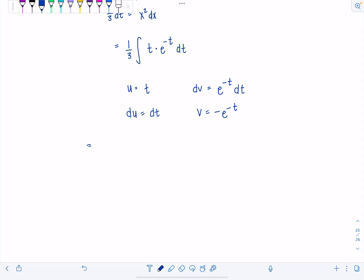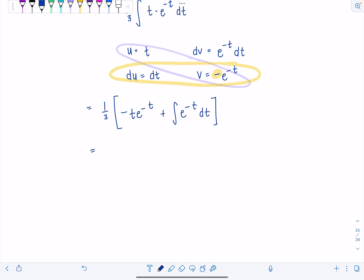So now we have 1 3rd times product uv right here. So that's going to be negative te to the negative t minus the integral of vdu. But since there's another minus sign sitting there, I'm going to write plus integral e to the negative t dt. How are we doing?